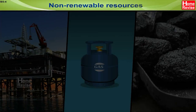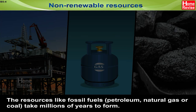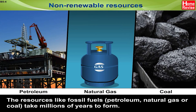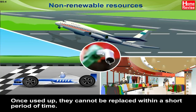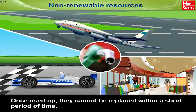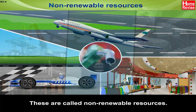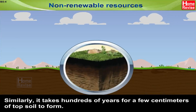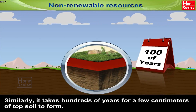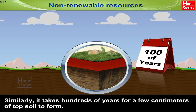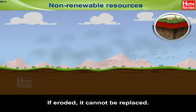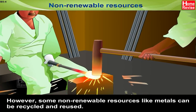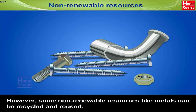Non-renewable resources: Resources like fossil fuels — petroleum, natural gas, or coal — take millions of years to form. Once used up, they cannot be replaced within a short period of time. These are called non-renewable resources. Similarly, it takes hundreds of years for a few centimetres of topsoil to form, and if eroded, it cannot be replaced. However, some non-renewable resources like metals can be recycled and reused.